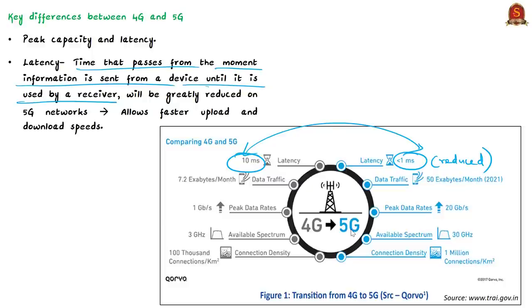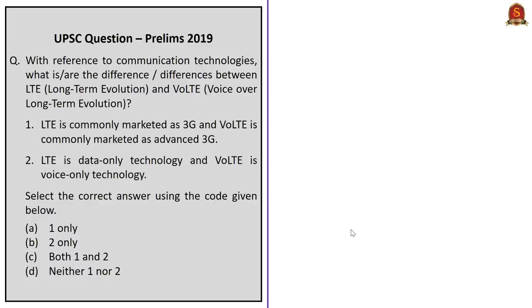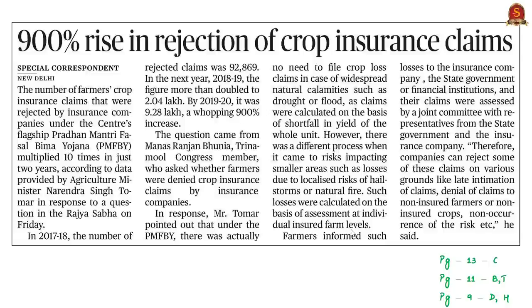Coming to India, 5G is yet to be launched, and probably by next year, many metro cities are expected to have 5G connectivity. These are some of the key differences between 1G, 2G, 3G, 4G, and 5G mobile network generations. Now let's move on to the next news article.